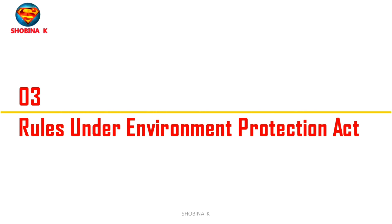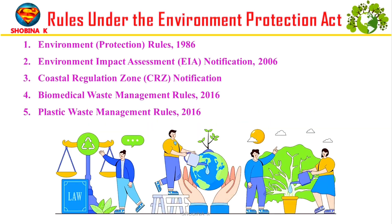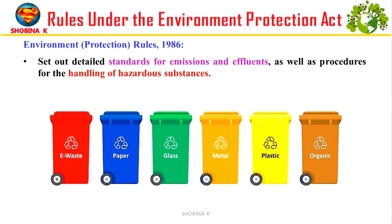Now, what are the rules under EPA? These include: Environment Protection Rules, 1986; Environment Impact Assessment (EIA) Notification, 2006; Coastal Regulation Zone (CRZ) Notification; Biomedical Waste Management Rules, 2016; and Plastic Waste Management Rules, 2016. The Environment Protection Rules, 1986 were formulated under the Environment Protection Act, 1986 and provide the framework for conservation of the environment and prevention and control of pollution, covering aspects such as air pollution, water pollution, and hazardous waste management.